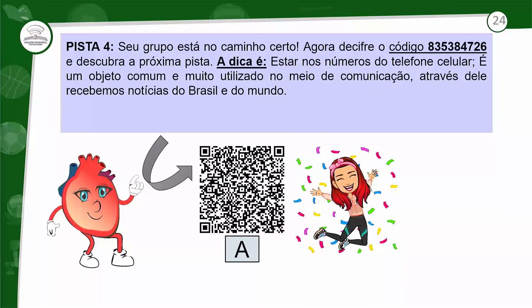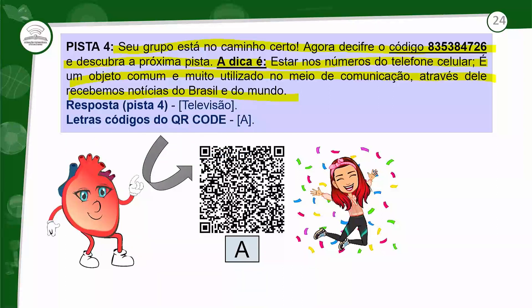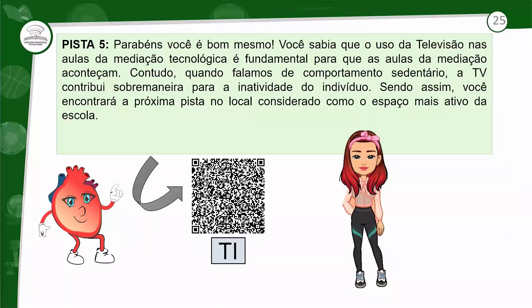Quando ele chegar no celular, na pista 4 vai estar escrito: o seu grupo está no caminho certo. Agora decifre o código 835384726 e descubra a próxima pista. A dica: está nos números do telefone celular — é um objeto comum e muito utilizado no meio de comunicação; através dele recebemos notícias do Brasil e do mundo. Quando o aluno descobriu o celular, você, professor, vai ter que dar a pista para ele, falar o código. Ele vai pegar o próprio celular e descobrir. O que significa esse código: televisão. Quando ele decifrar esse código no celular, ele vai achar a palavra televisão. Ele pegou a letra A e vai para a pista 5.